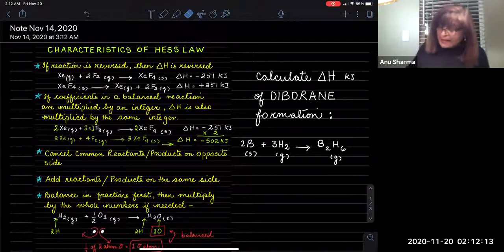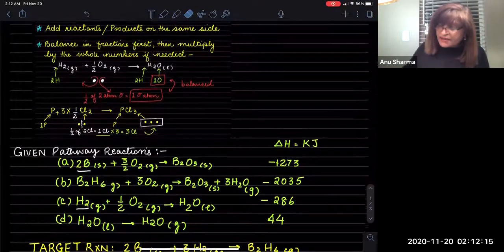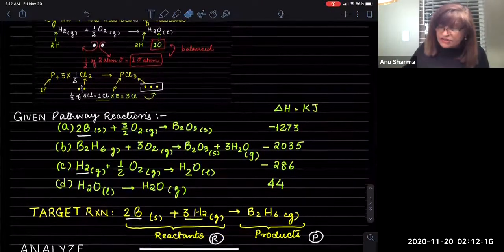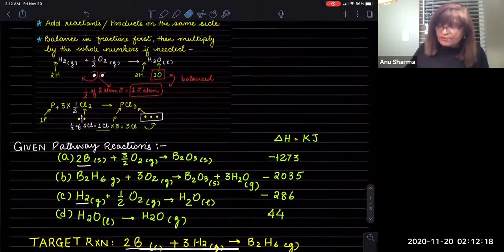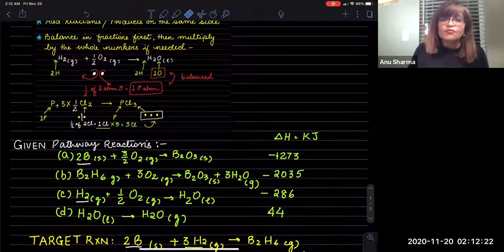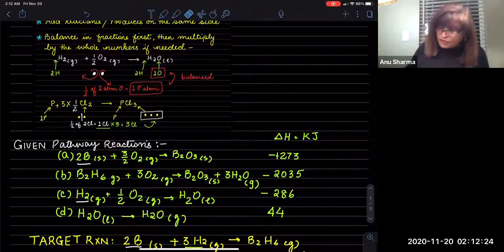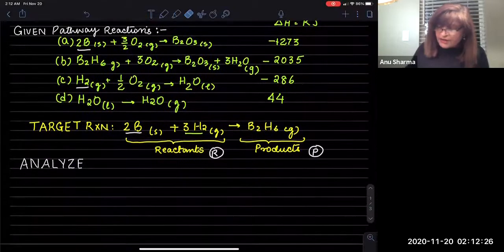When we are balancing equations using fractions, first we are going to balance the fractions first. After that, we multiply by the whole number as needed. So we are going to look into these here.